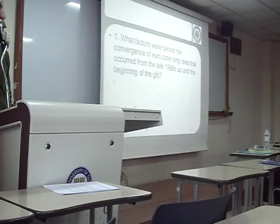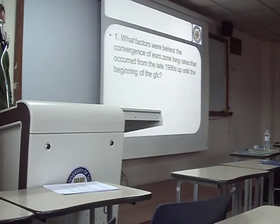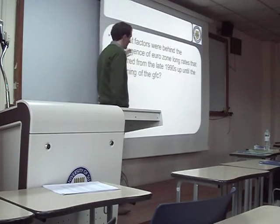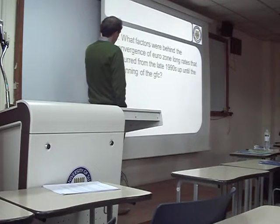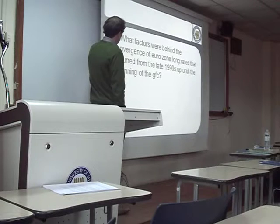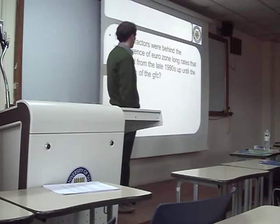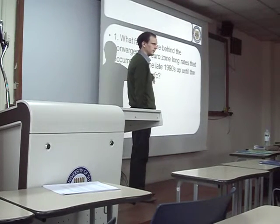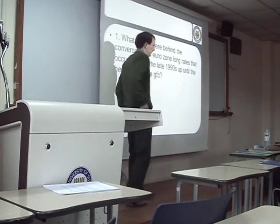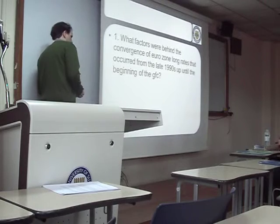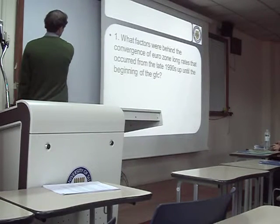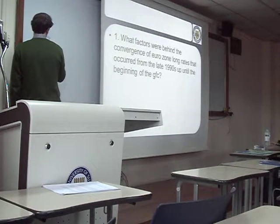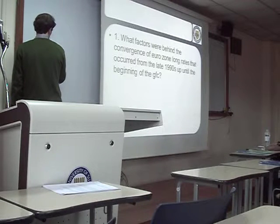We were going through the start of the case and also want to answer a couple of questions from last class. We had the convergence of the Eurozone long rates that occurred from the late 90s up until the beginning of the GFC — the Global Financial Crisis. We discussed this in the last class. We saw the graph, and we saw that Italy's rates got very close to the German rate until the financial crisis, and then Italy's rate went up again.